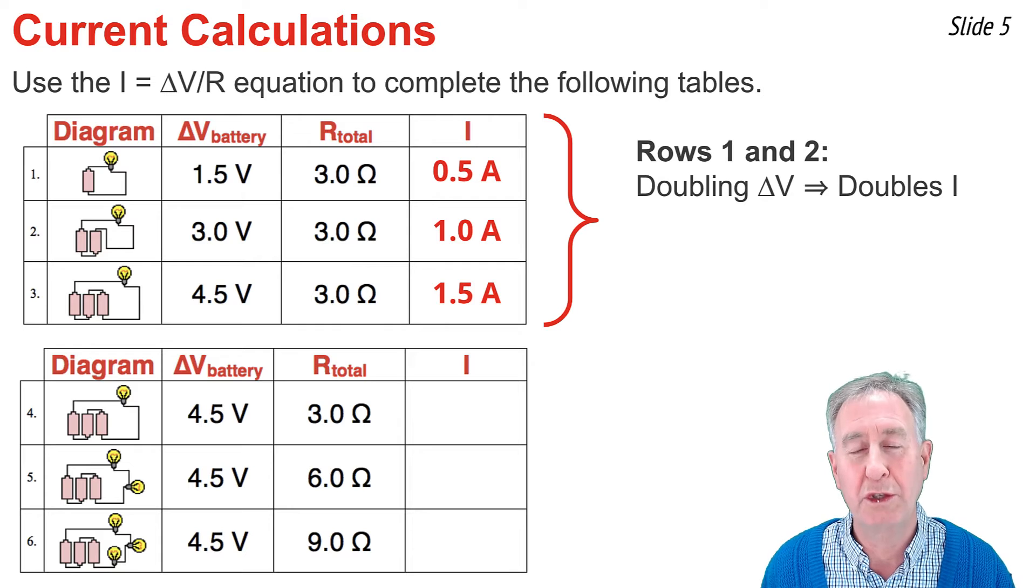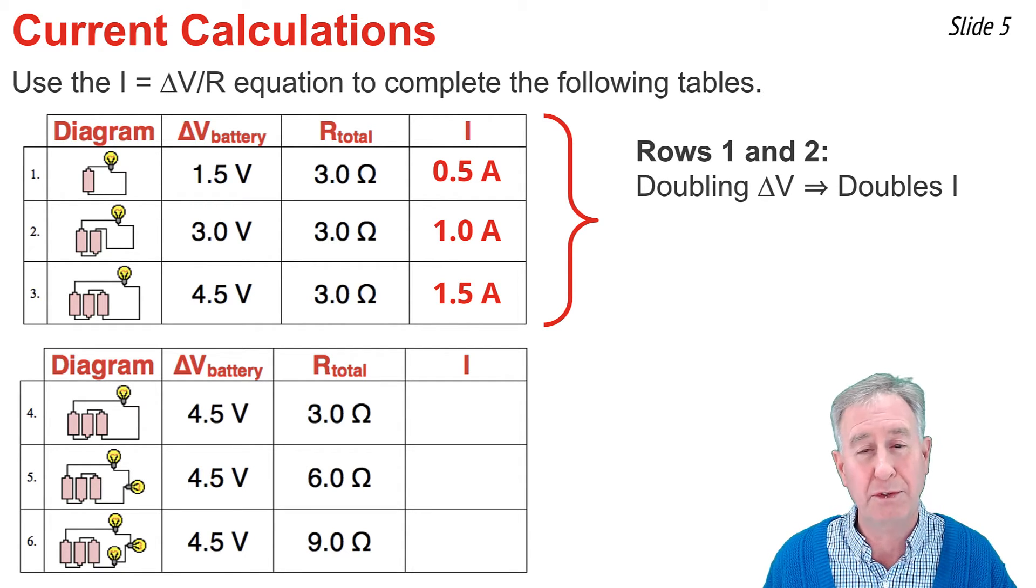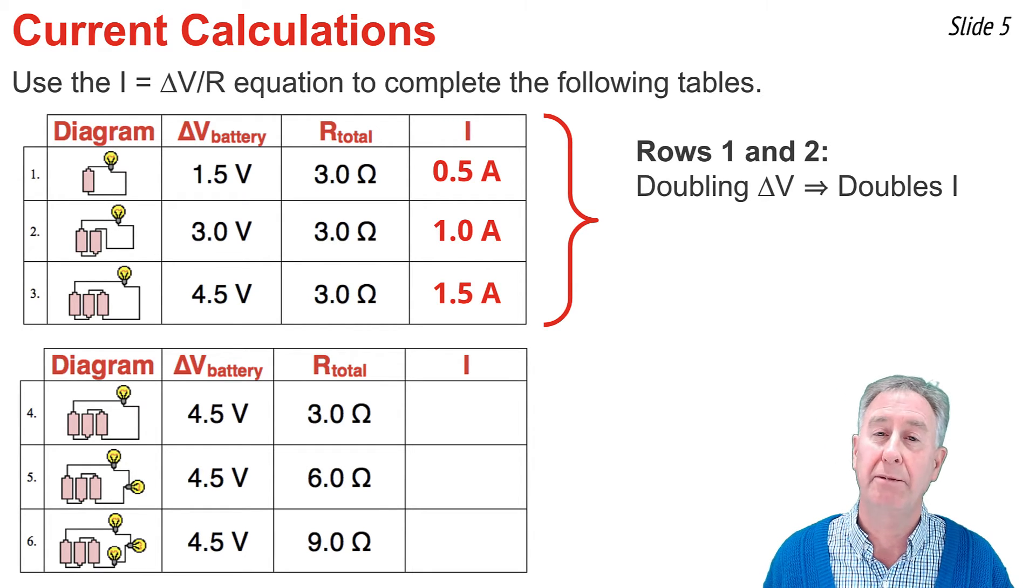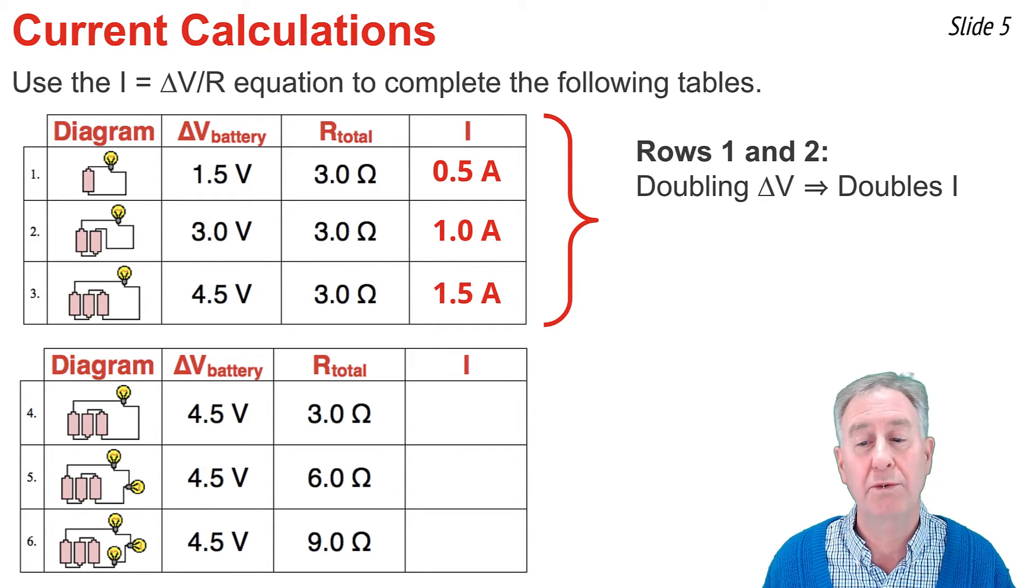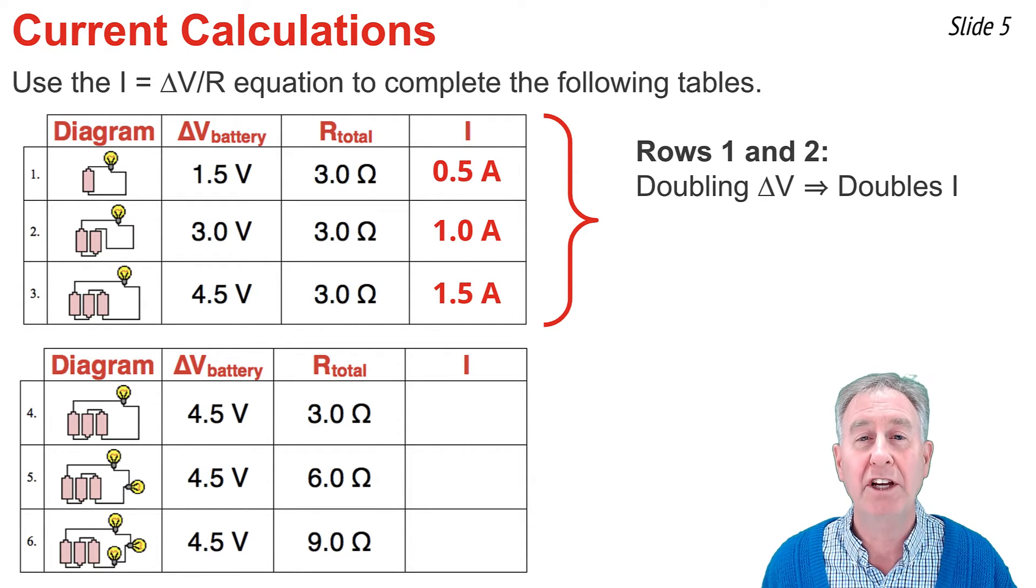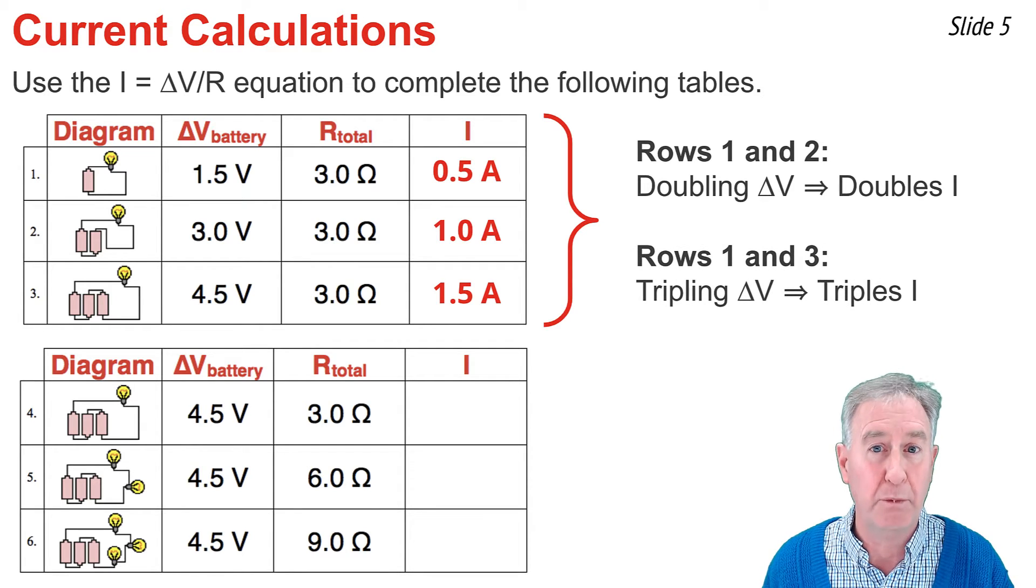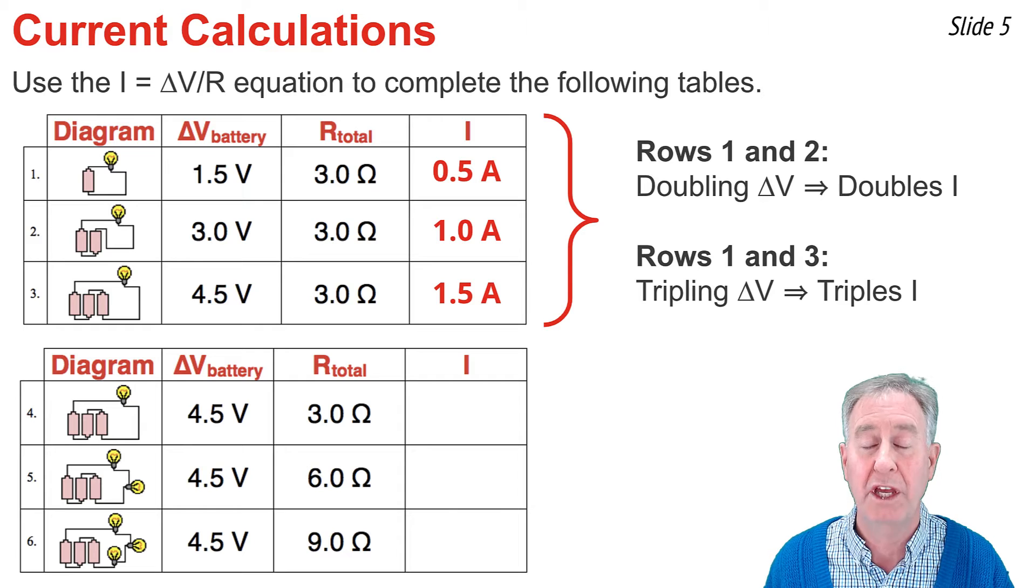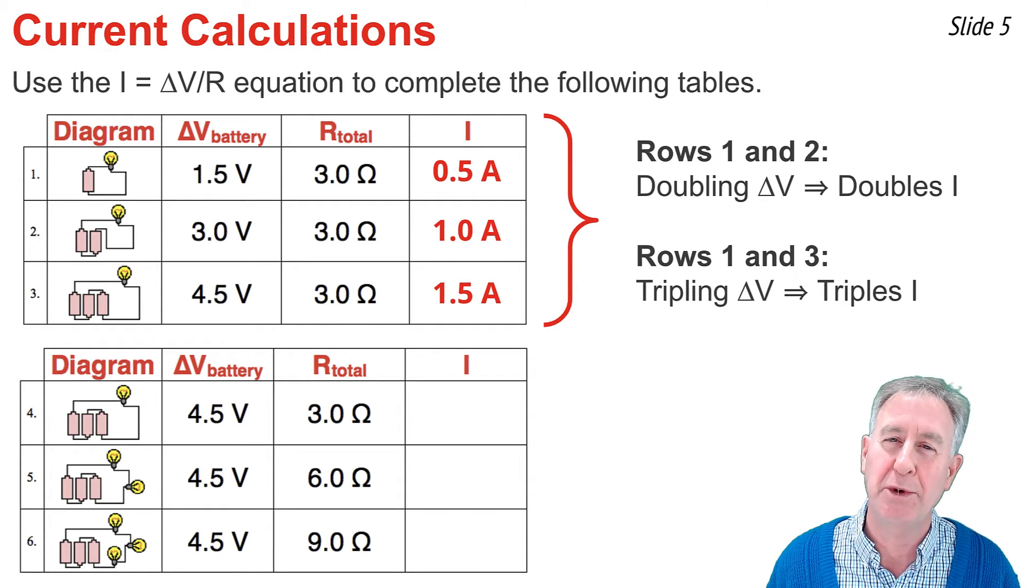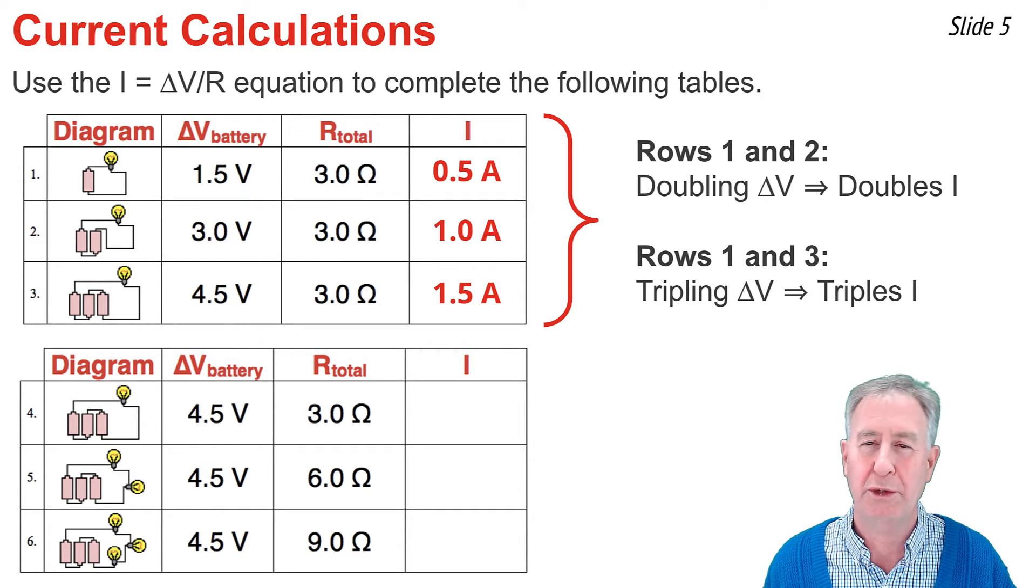If I look at rows 1 and 2, I notice that delta V is doubling from 1.5 volts to 3 volts. What happens to the current? The current is also doubling from 0.5 amps to 1.0 amps. That's why we say they're directly proportional. If I look at rows 1 and 3, I notice delta V is tripling from 1.5 to 4.5 volts, and the current is tripling as well from 0.5 amps to 1.5 amps. Current and delta V are directly proportional.